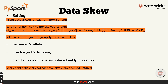When performing joins on skewed data, you can also use Spark's built-in skewed join optimization. This feature automatically detects skewed keys and adjusts the join strategy to balance the workload. To enable this, you configure the skewed join optimization setting. By using this setting, Spark will try to detect skewed keys automatically and handle them by splitting the heavy keys into smaller, more manageable chunks. It's a great way to let Spark optimize the join for you.